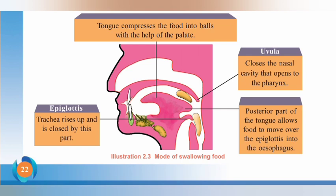The right answer is called epiglottis. The trachea rises up and is closed by this part — that means the epiglottis. The epiglottis prevents the entry of food into the windpipe.